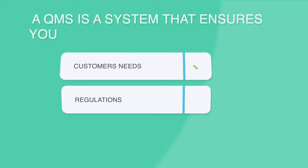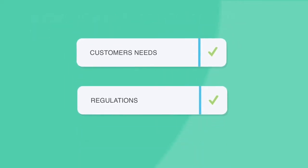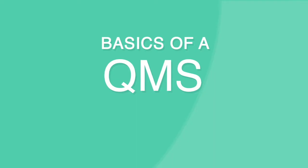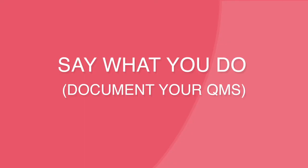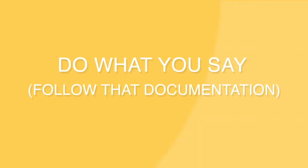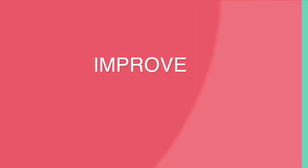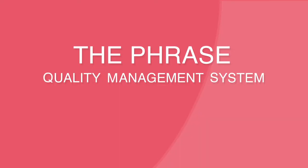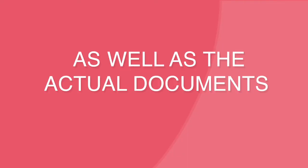A quality management system is a system that ensures you meet each of these requirements. In very basic terms, a QMS requires that you say what you do, document your QMS, do what you say, follow that documentation, prove it, audit, and improve it. The phrase quality management system, or QMS, is used to describe this system as well as the actual documents that describe the system.